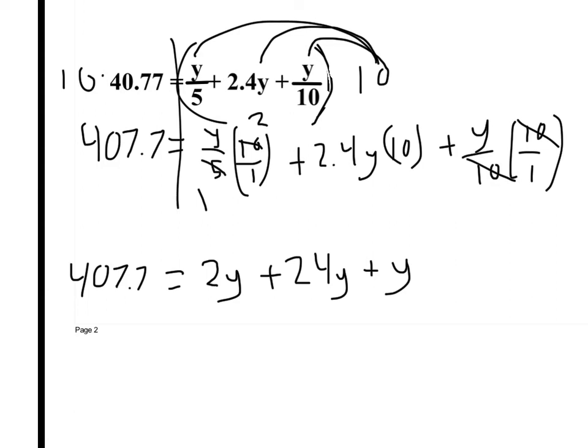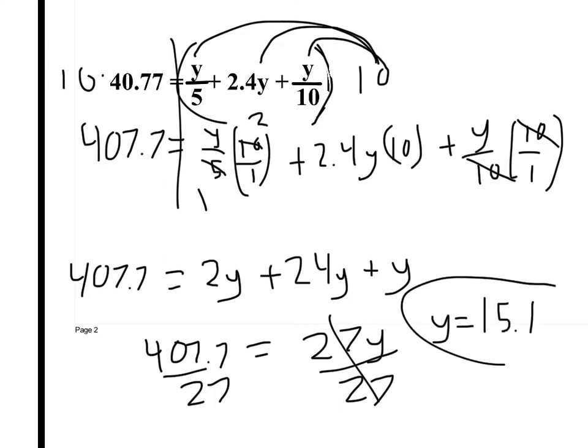Now what do I do? When I can combine like terms, 2 plus 24 plus 1, and that gives me 27y. Over here, we have 407.7. So then we divide by 27. 407.7 divided by 27 is 15.1. And that's my answer.